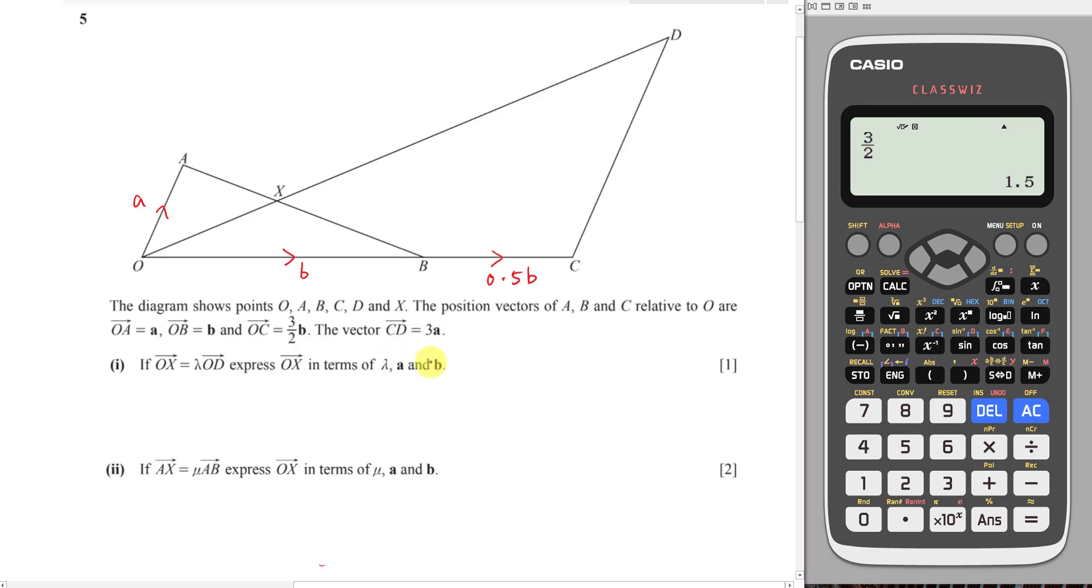Then C to D is 3A. So at least I know OA is parallel to OD. Why? Because both of them have A only.